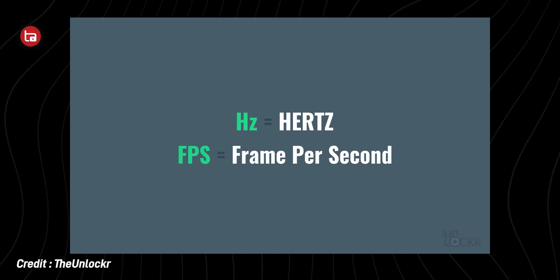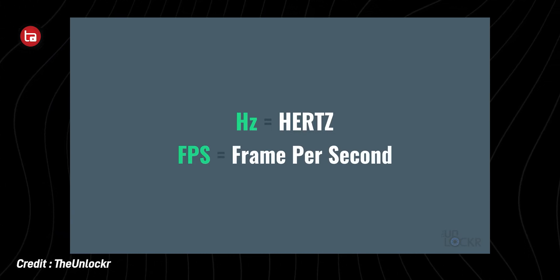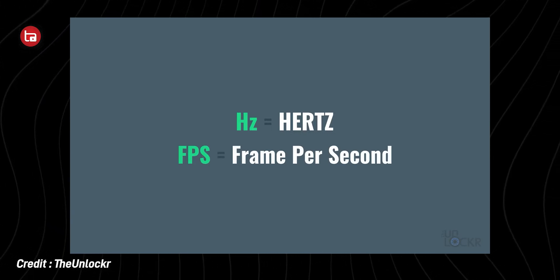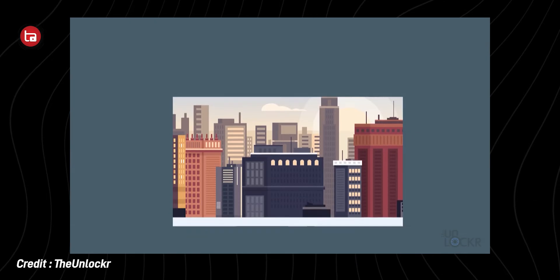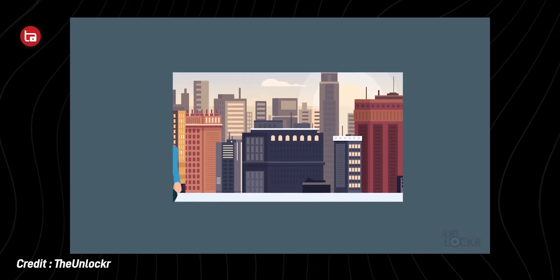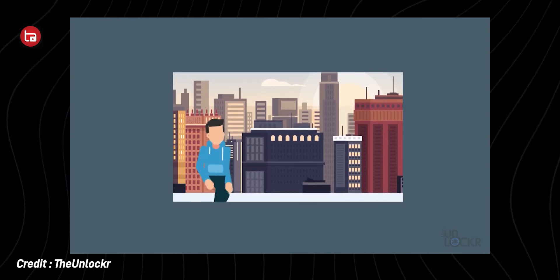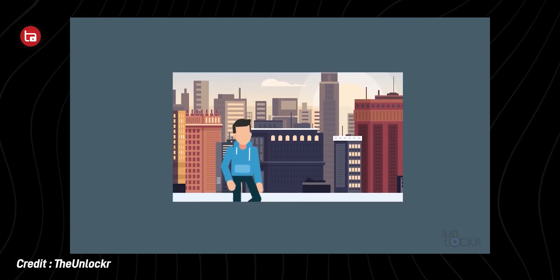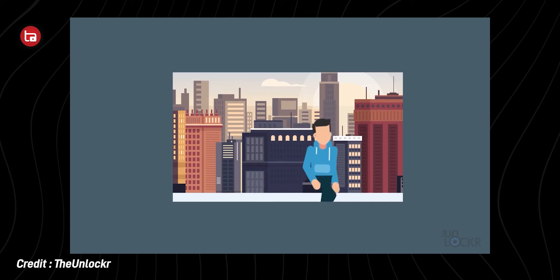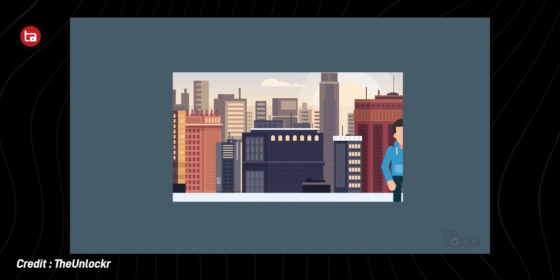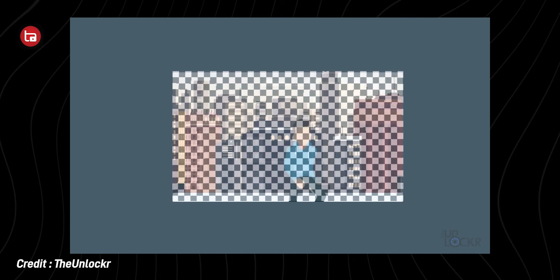Frames per second is nothing but the number of frames played per second. So if you're watching a video — say this video is actually 24 frames per second — each second you will see 24 photographs, so that is why you see a moving object. The higher the refresh rate and the higher the FPS of a video, the smoother the watching experience you have.